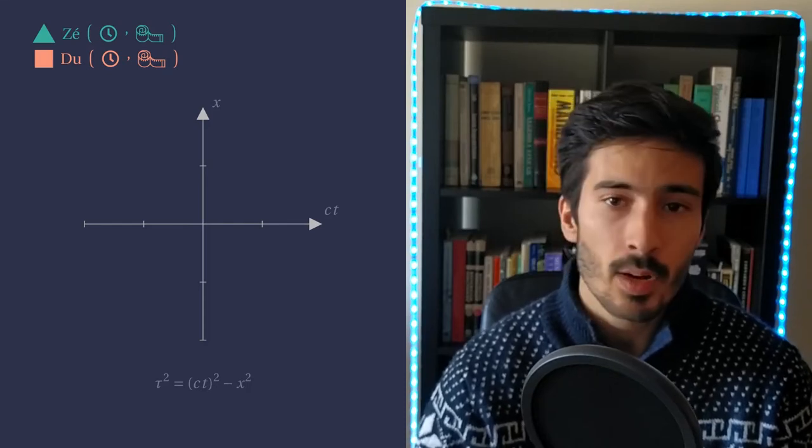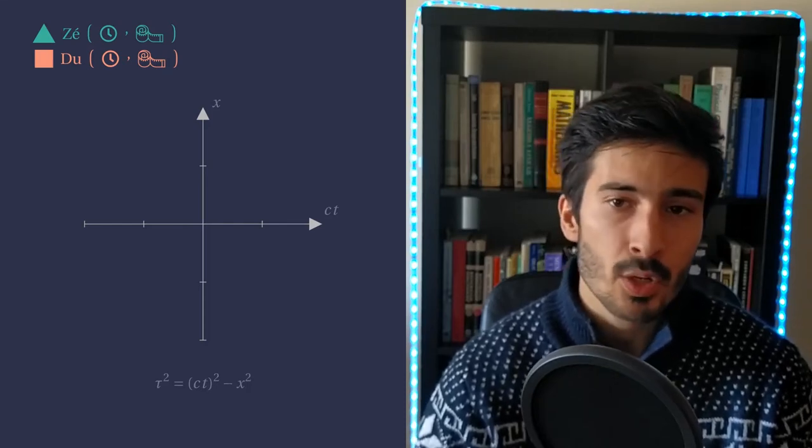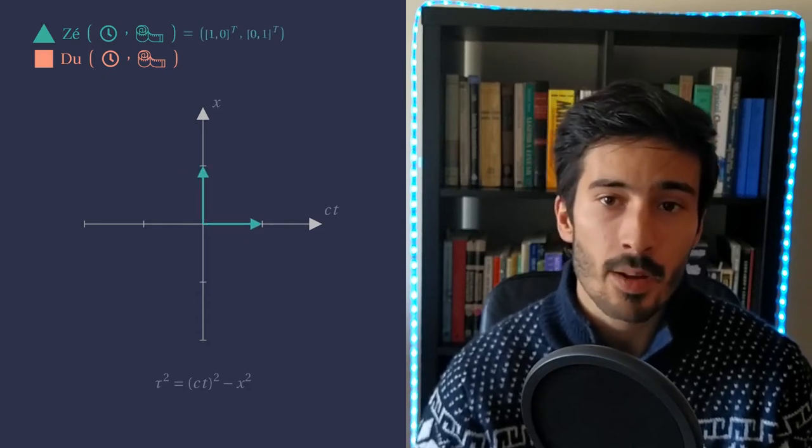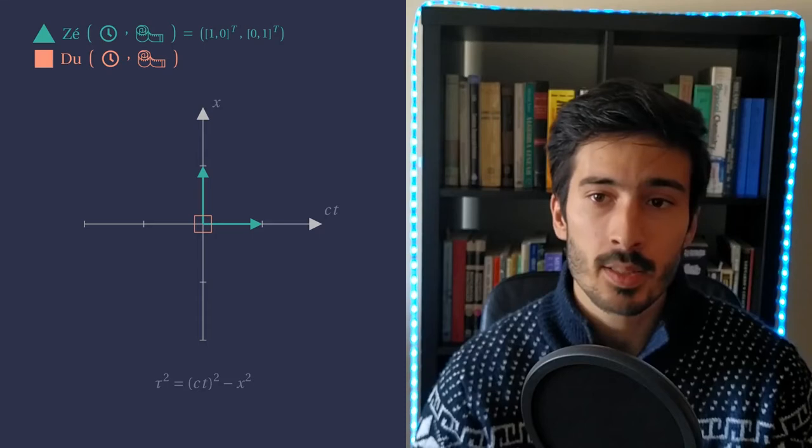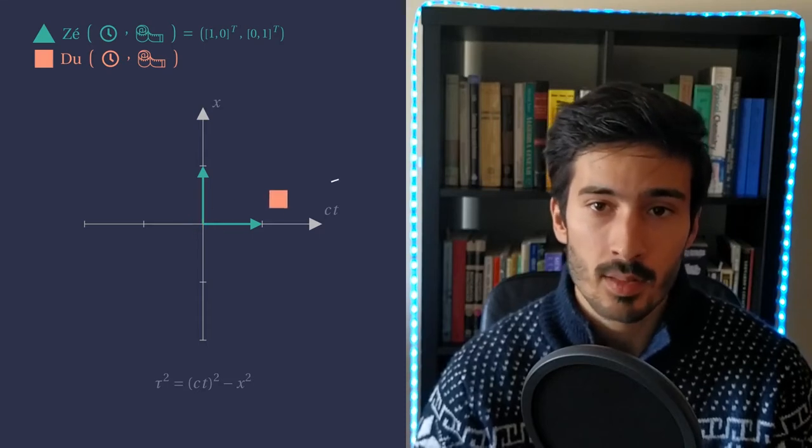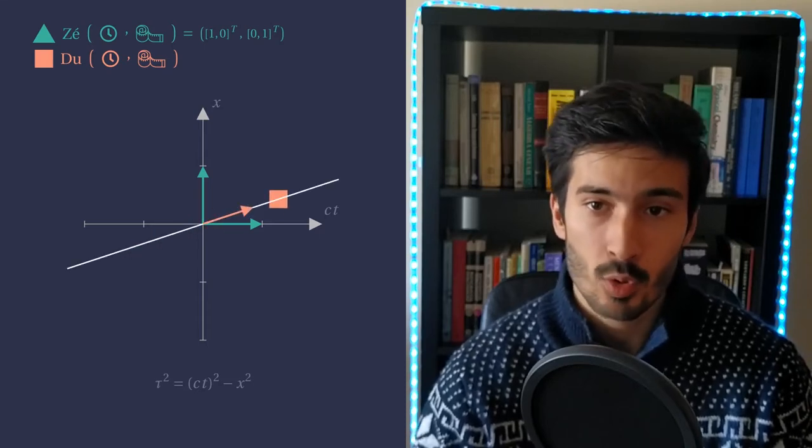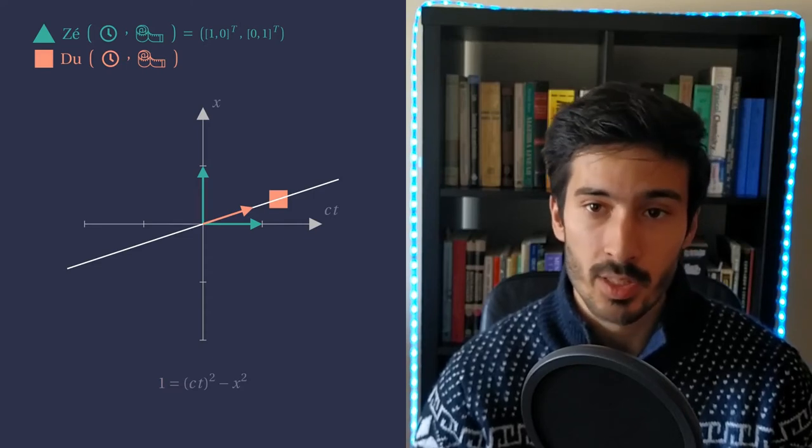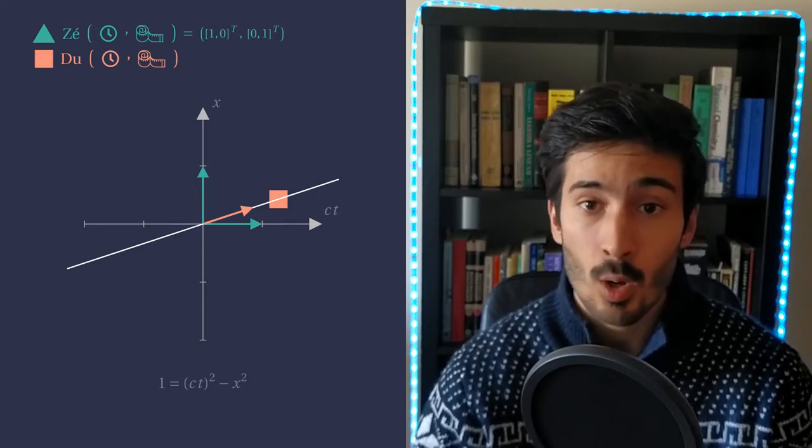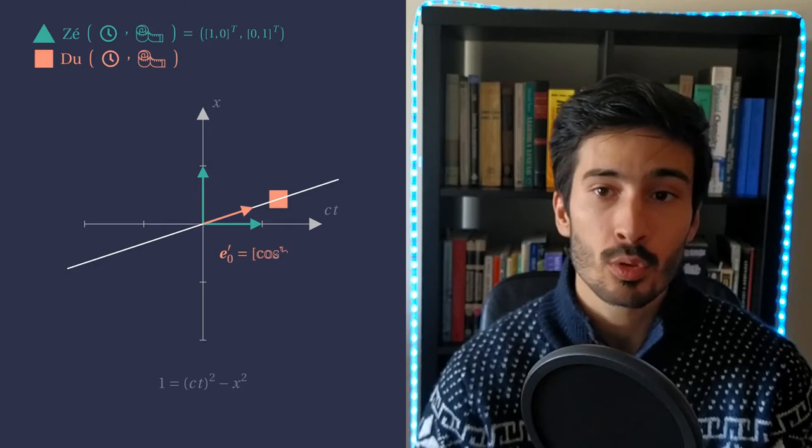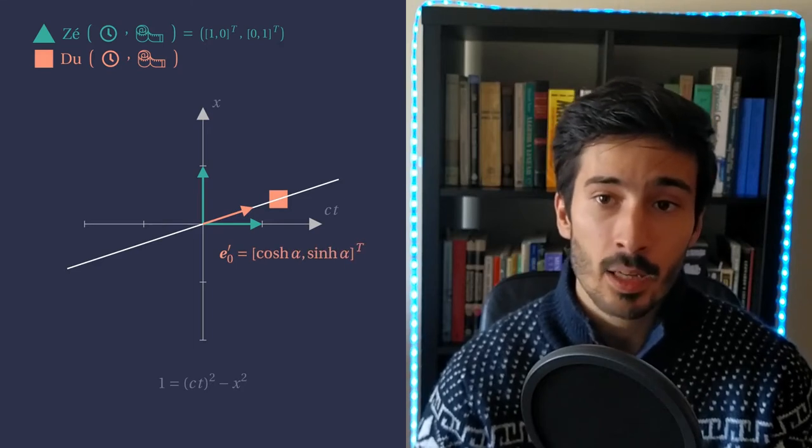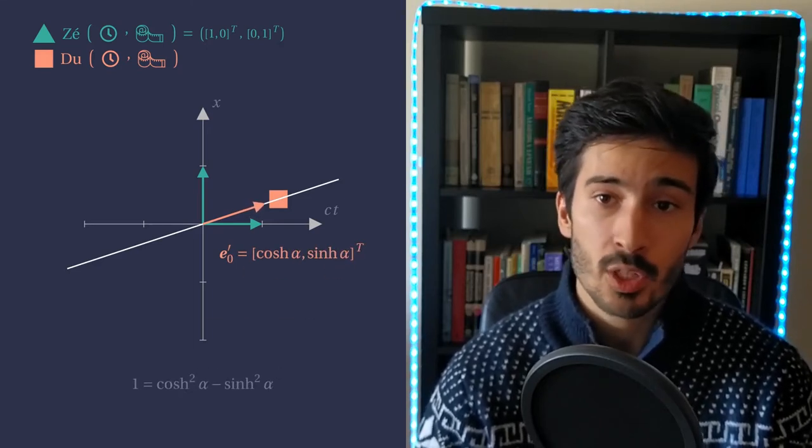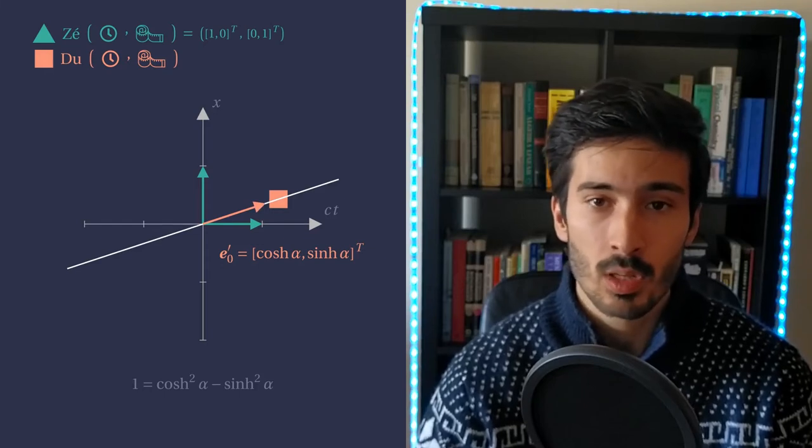Consider Ze and Du again. Ze's clock and measuring stick will remain the same, but now Du's are different. The sine and the cosine functions won't work because the sum of their squares is constant, and we need the difference of their squares to be constant. Luckily, we know the hyperbolic functions, the hyperbolic sine and cosine, so we can write the vector corresponding to Du's clock and satisfy the equality for all velocities.